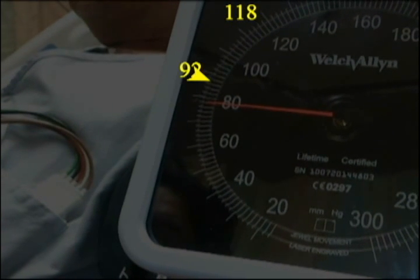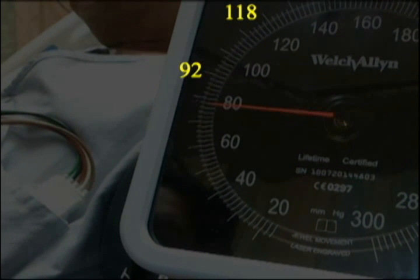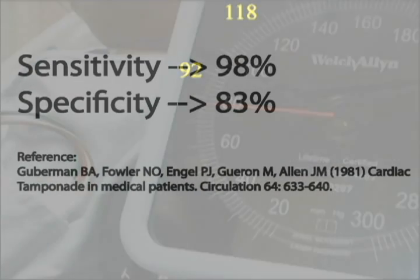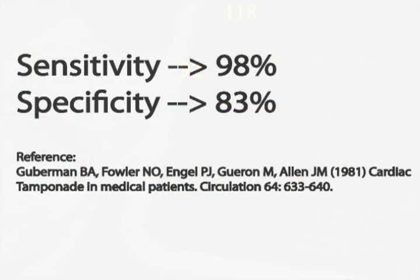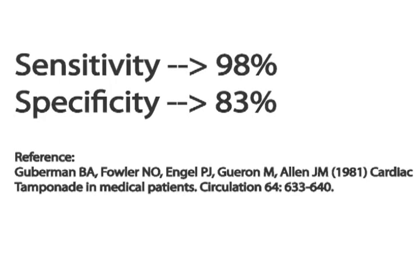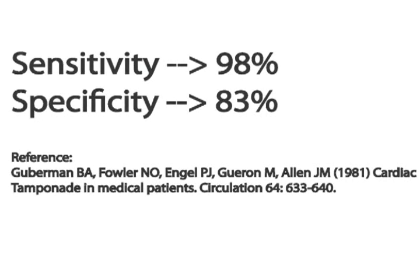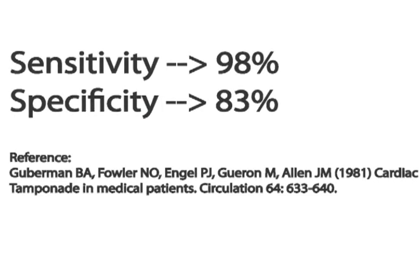This clip was recorded from a patient at Stanford University with a pericardial effusion. Pulsus Paradoxus can be a valuable clinical tool and has been shown to have a sensitivity of 98% and a specificity of 83% in predicting cardiovascular compromise.